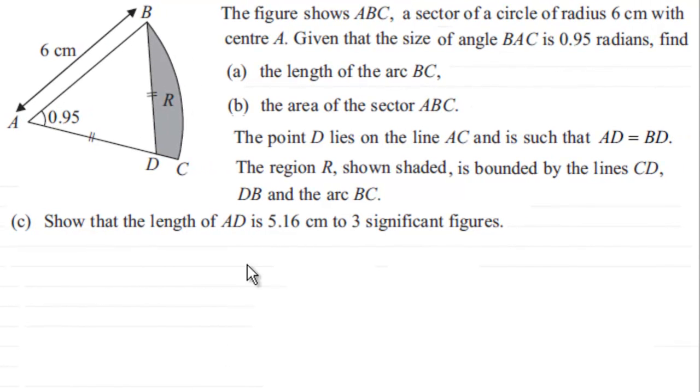Hi, now for this next part we're told that the point D lies on the line AC and is such that AD equals BD and the region R is shown shaded and it's bounded by the line CD, BD and the arc BC.